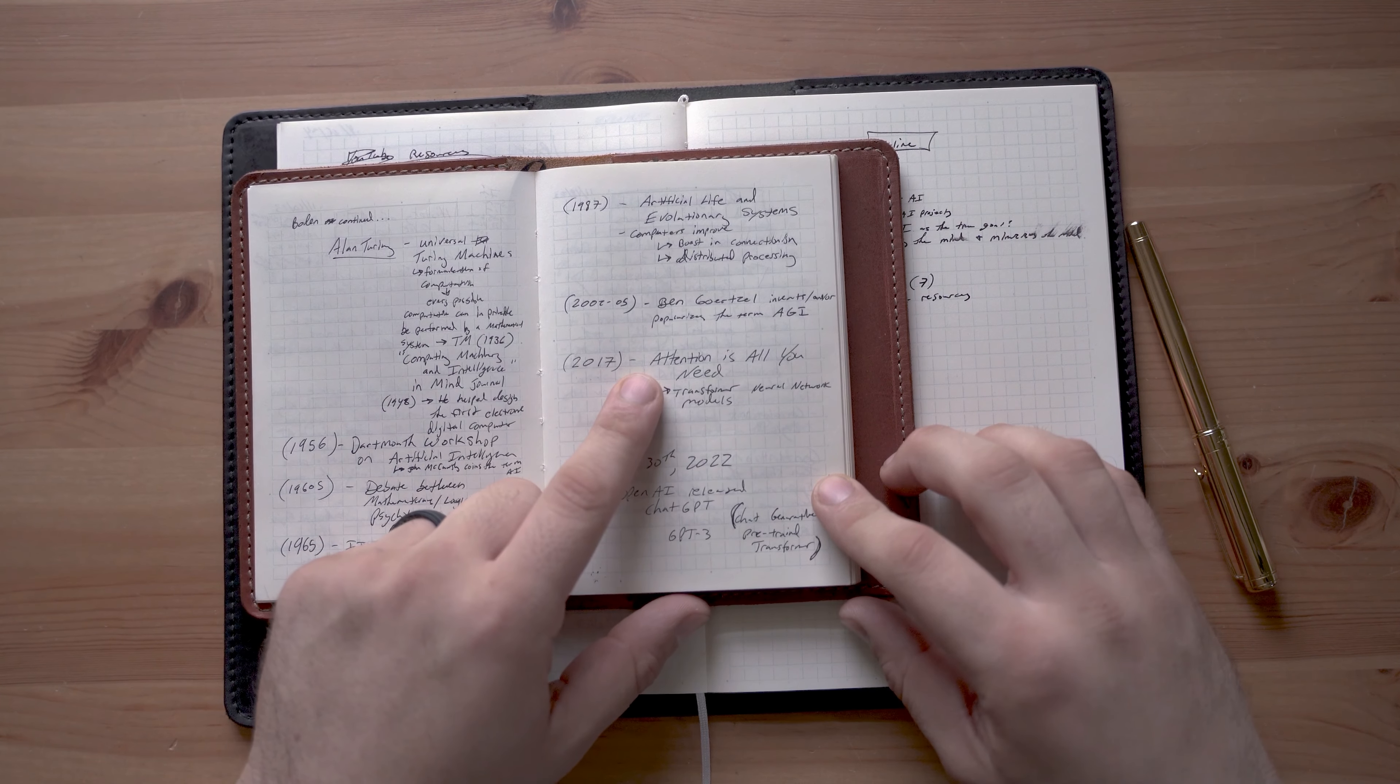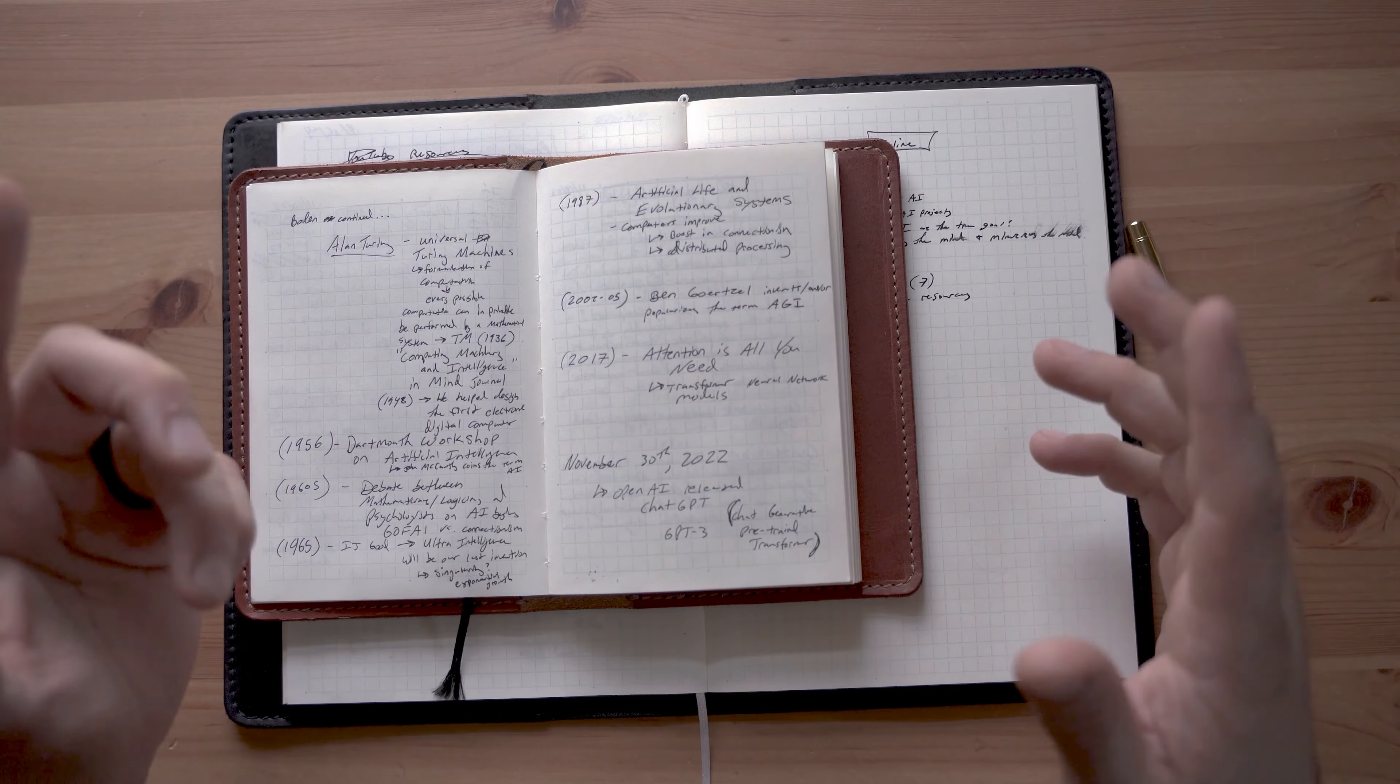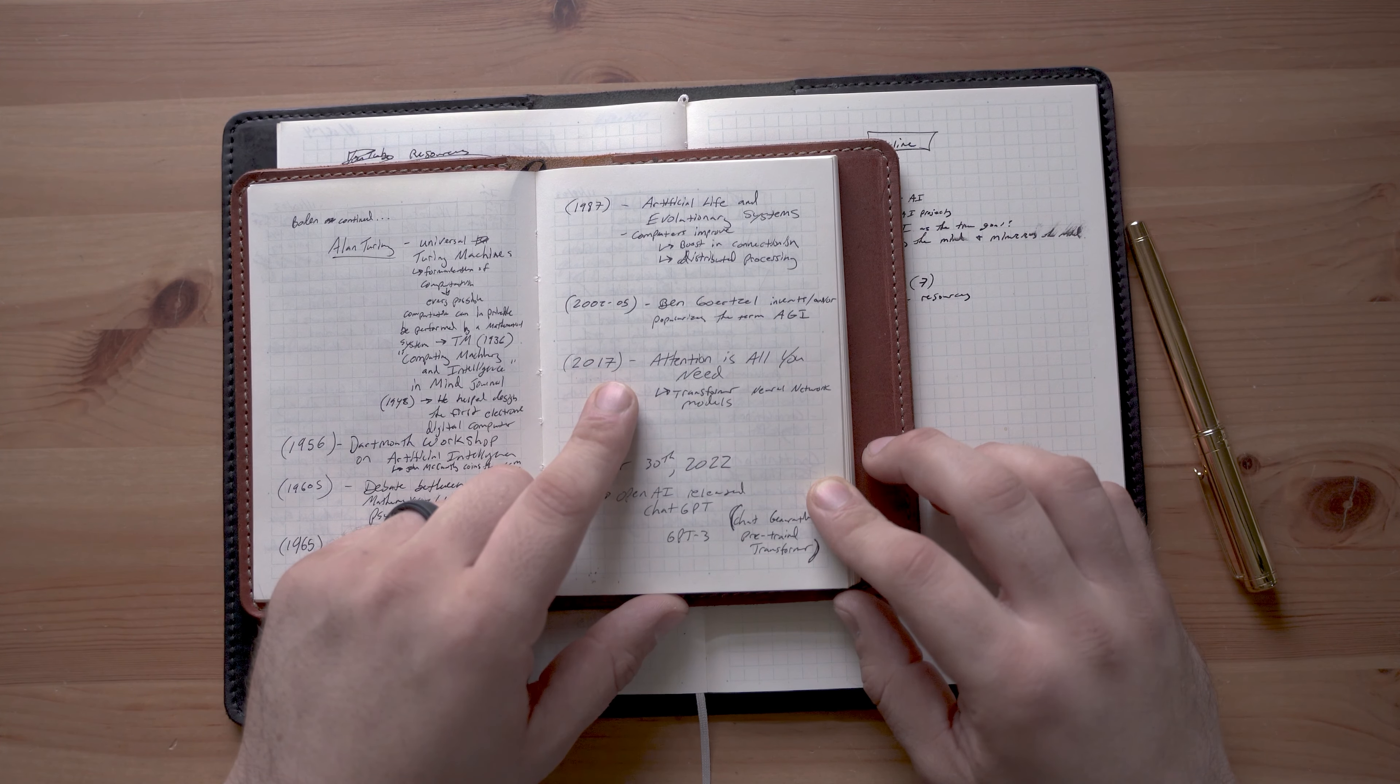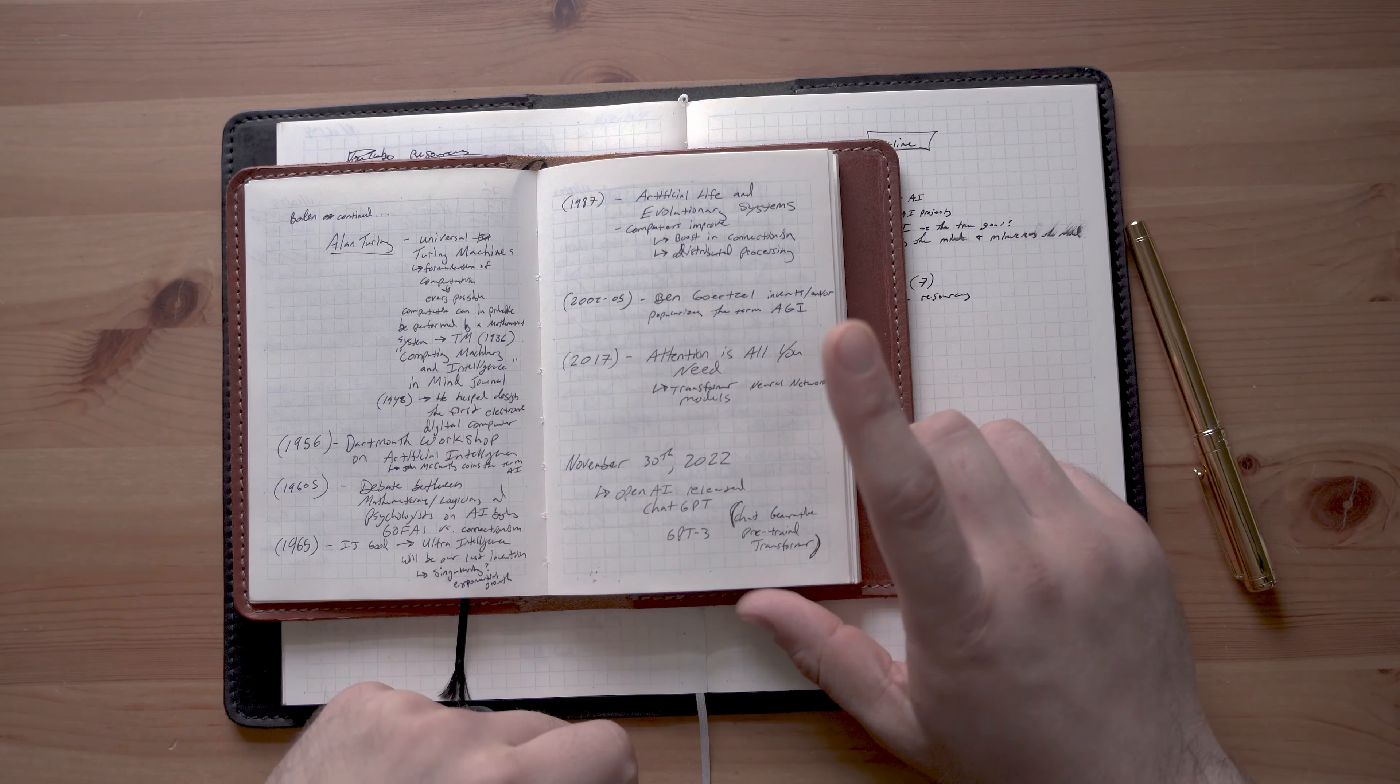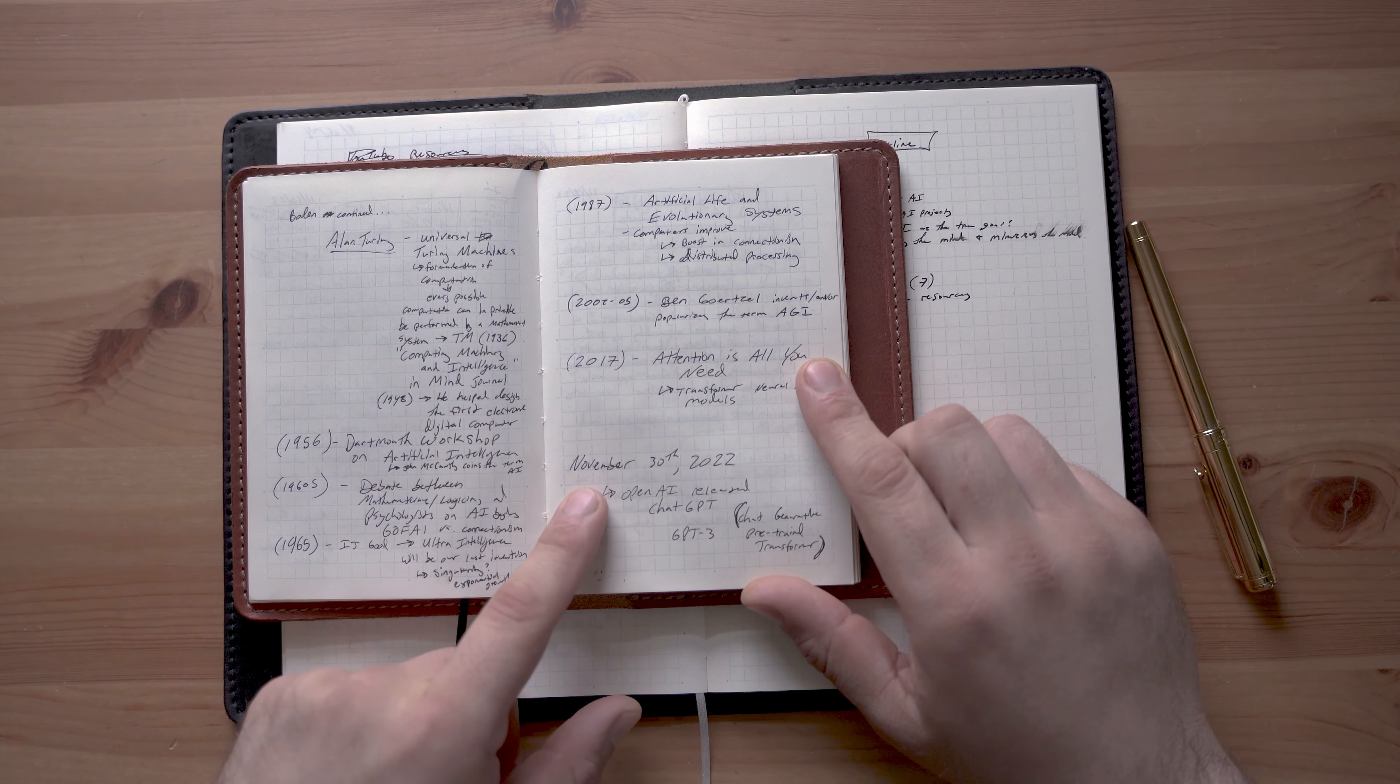Okay, so then in 2017, Google releases this paper, Attention is All You Need, and this just exploded everything. This is the introduction of transformer neural network models. Without this paper, you're not getting OpenAI's release of ChatGPT on November 30th, 2022.